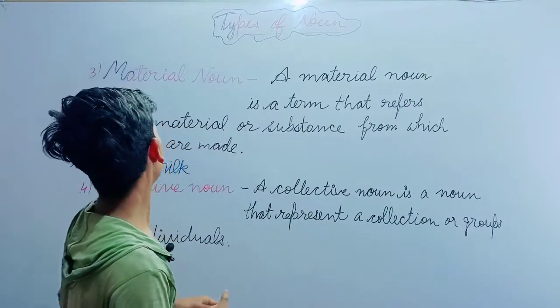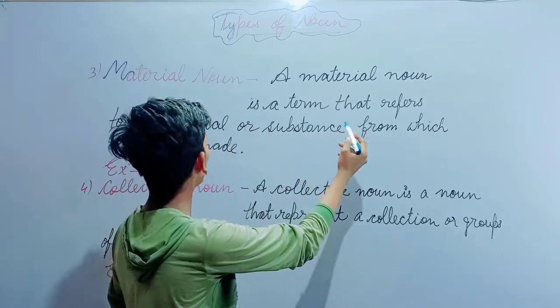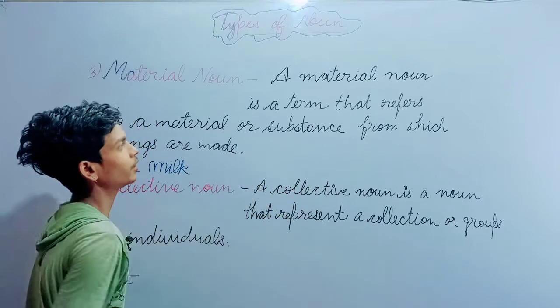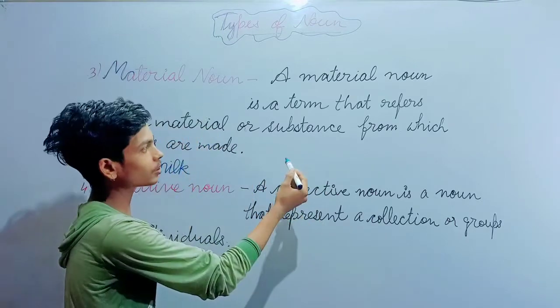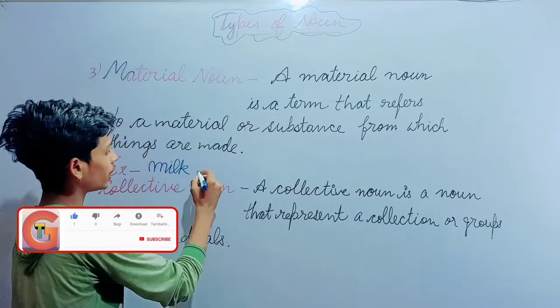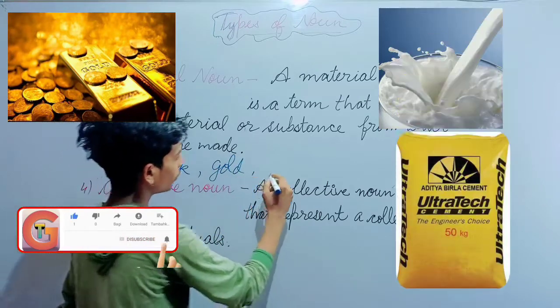The third type is material noun. A material noun is a term that refers to a material or substance from which things are made. Examples include milk, gold, and cement.